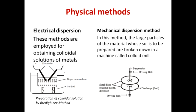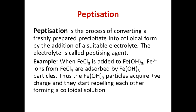Electrical dispersion is used mostly to prepare sols of metals, whereas mechanical dispersion methods are used for other materials. Peptization is a method where a colloidal solution is made from a fresh precipitate after adding a compound that contains common ions.